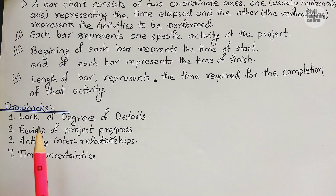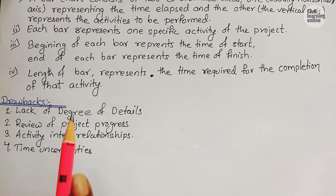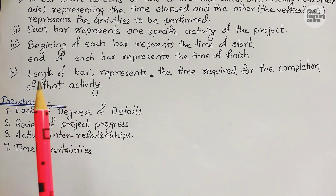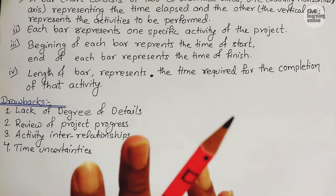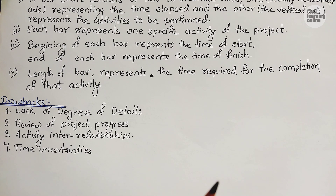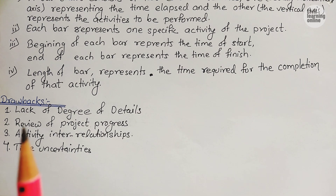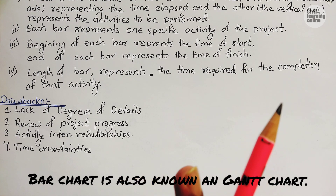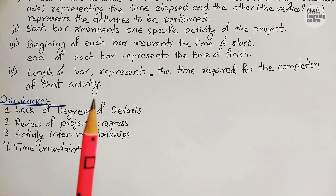Third drawback is activity interrelationship. If two activities have the same starting point but different end points, they are drawn as parallel lines. With many concurrent activities, this creates confusion. Fourth drawback is time uncertainties — we allocate a time estimate for completing an activity, but due to lack of detail or inability to track progress, we are uncertain whether the activity will actually be completed within that time.